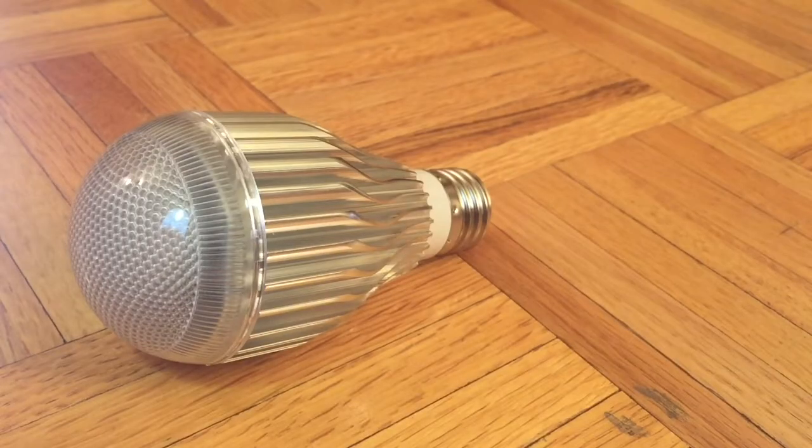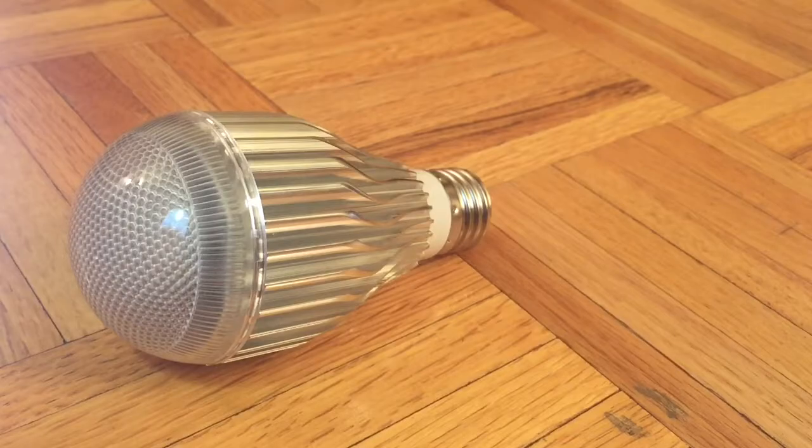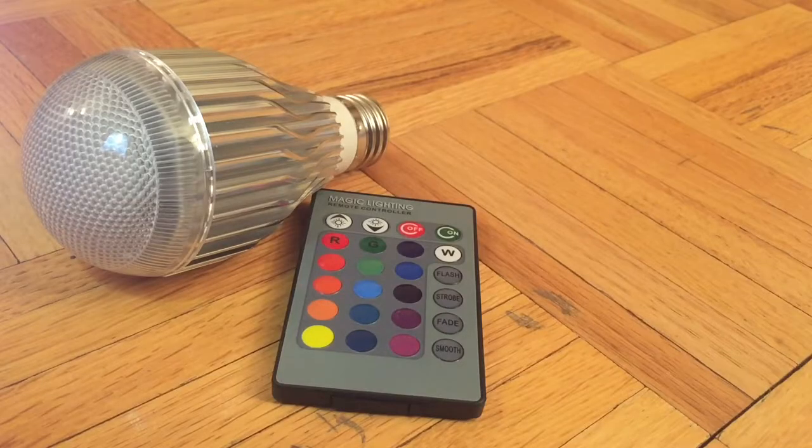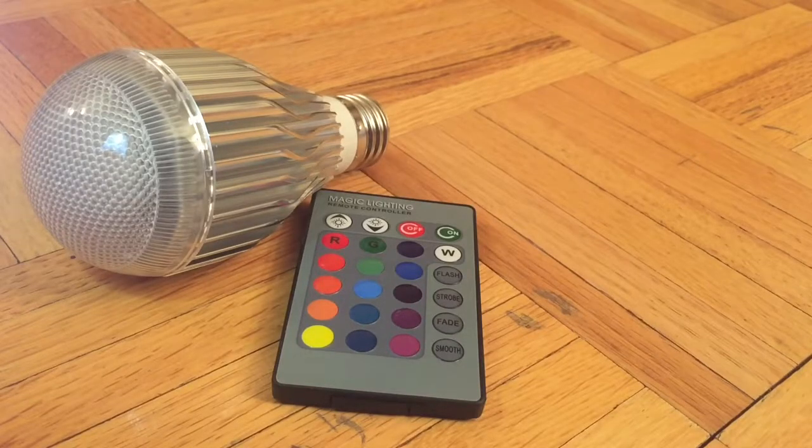Hello YouTube, this is FunReviews and today I'm doing a review on the E27 RGB light bulb. This light bulb is 9 watts and it comes with a remote that can be used to control it.